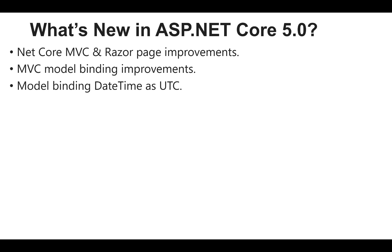The third feature of ASP.NET Core 5.0 is model binding DateTime as UTC. The next thing is support for C# 9 record types, which you can use in model binding improvements.